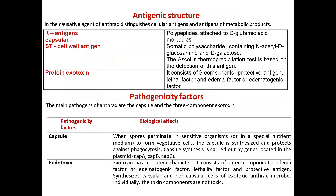The causative agent of anthrax has cellular antigens and antigens of metabolic products: capsular K-antigen, somatic polysaccharide ST antigen of the cell wall, and a protein exotoxin consisting of three components. The main pathogenicity factors are the capsule and the three-component exotoxin. The capsule is synthesized during spore germination and protects vegetative cells from phagocytosis. The exotoxin consists of the edema factor, the lethal factor, and the protective antigen.